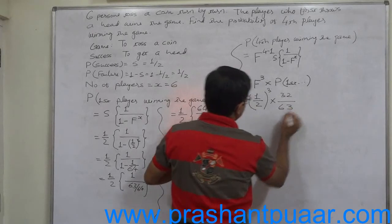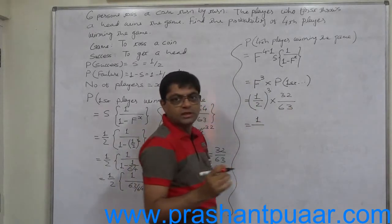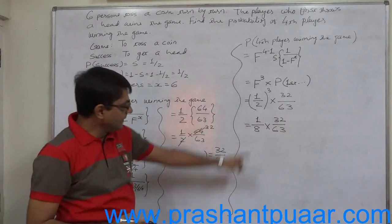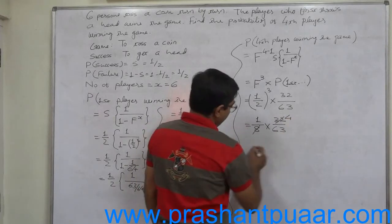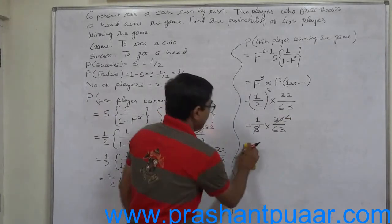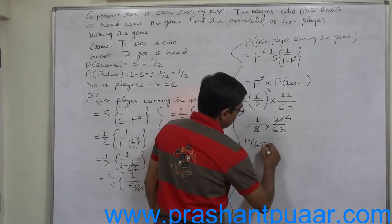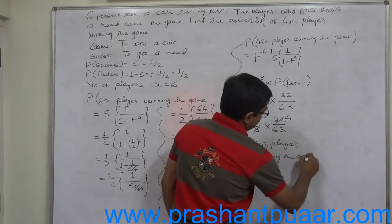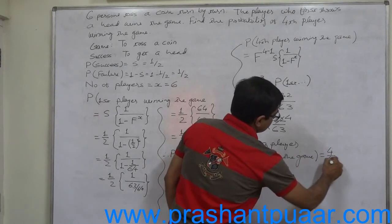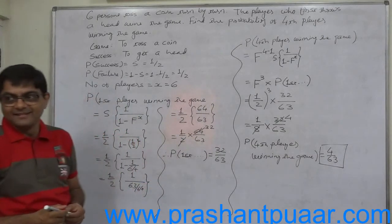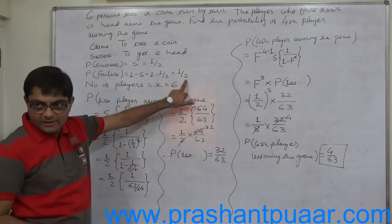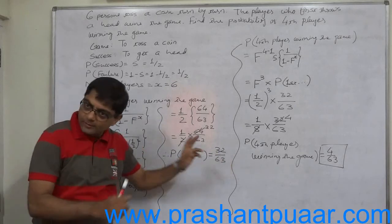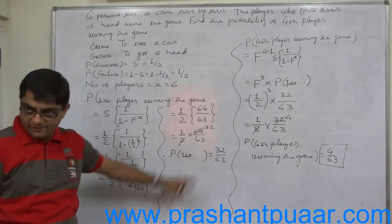That means (1/2) raised to 3 into 32/63. (1) raised to 3 is 1 and (2) raised to 3 is 8, so we get (1/8) into (32/63). After cancellation of 8 and 32 by 4, the probability of the fourth player winning the game comes to 4/63. This is our final answer. Since 1/2 is both the probability of success and failure, this is the binary case. You can calculate the probability of all players on the basis of just the first player's winning probability.